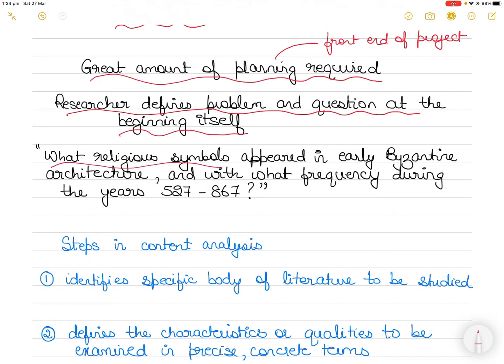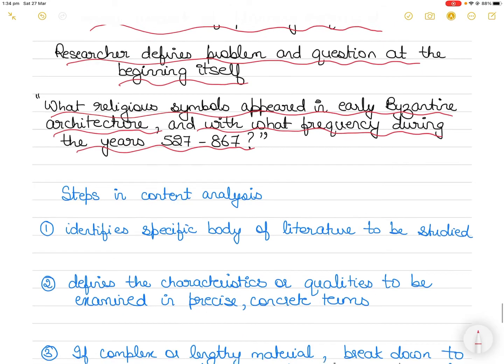For example, what religious symbols appeared in early Byzantine architecture and with what frequency during the years 527 to 867.